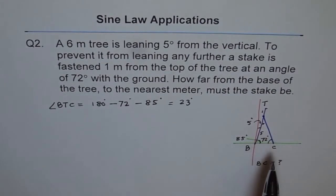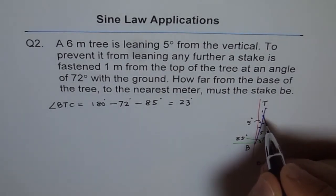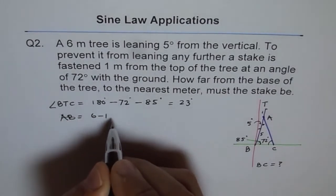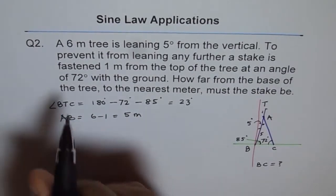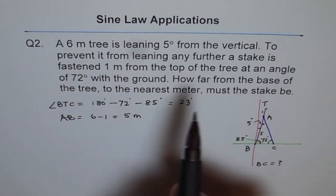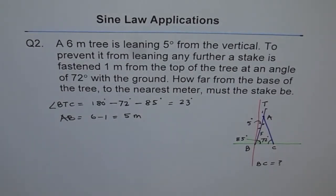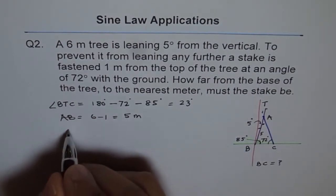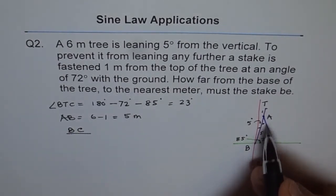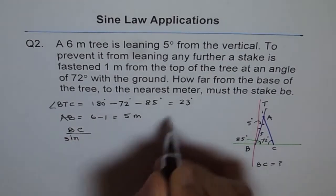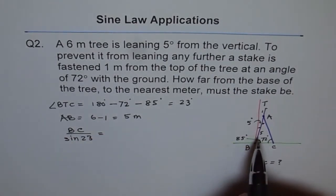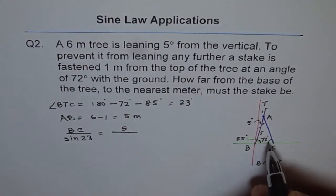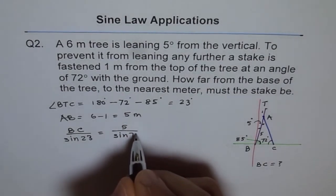We know all three angles and we also know one side. Let's call the stake attachment point A. Side AB equals 6 minus 1, which is 5 meters. Since we know the side opposite to the 72° angle, we can apply the Law of Sines. BC over sine of 23° equals 5 over sine of 72°.